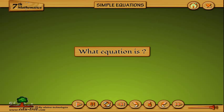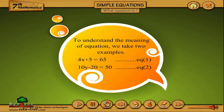What is an equation? To understand the meaning of equation, we take two examples. 4x plus 5 equals 65, we call it equation 1. 10y minus 20 equals 50, we call it equation 2.